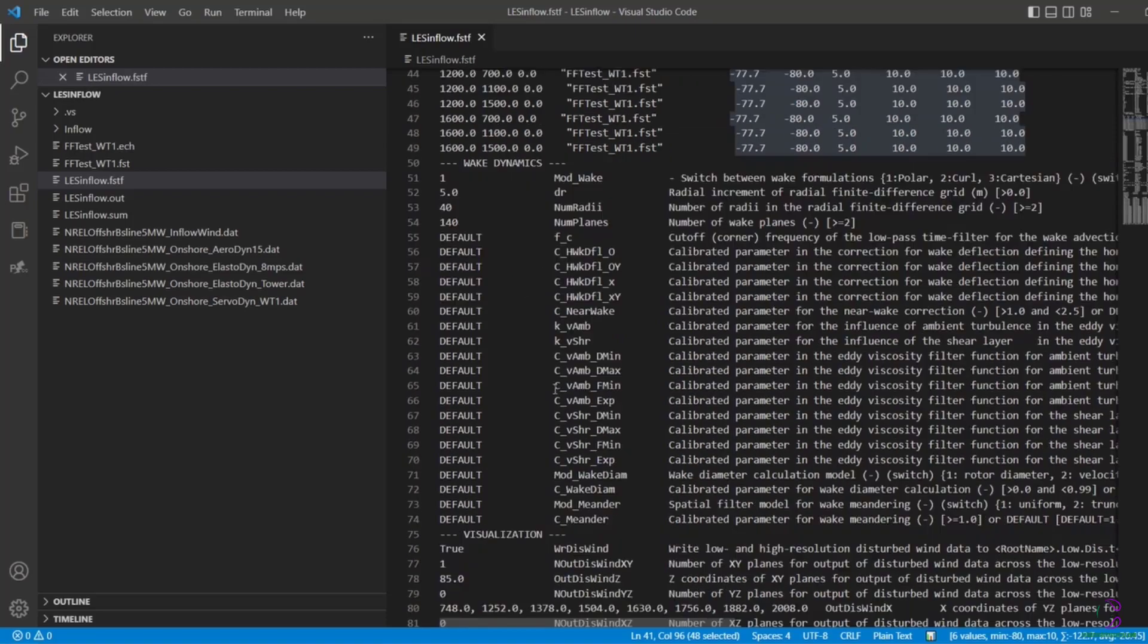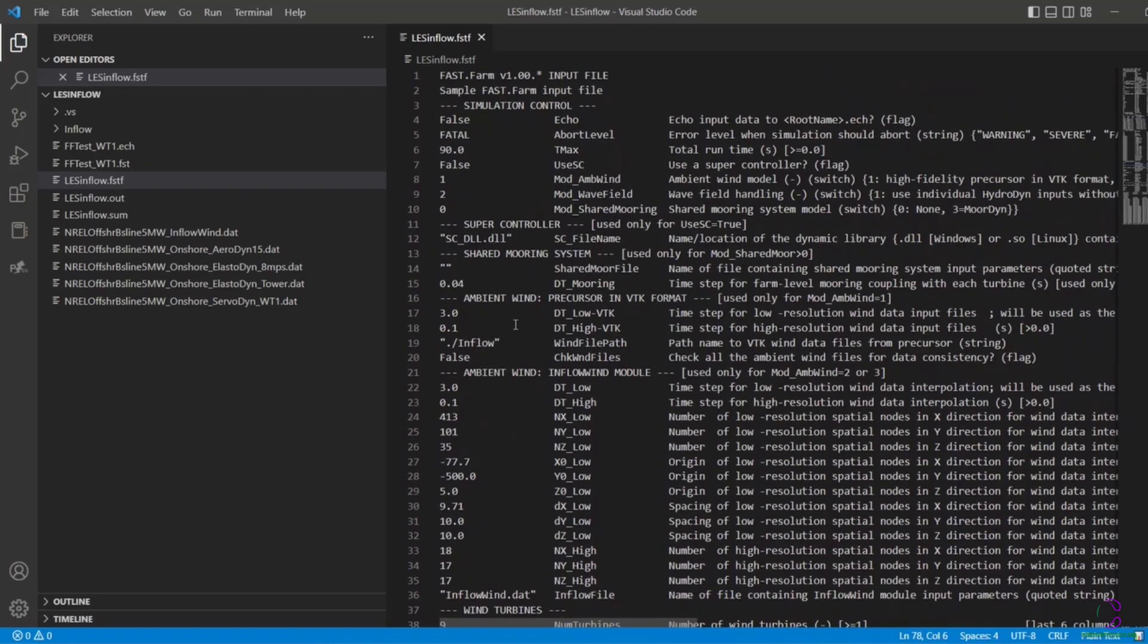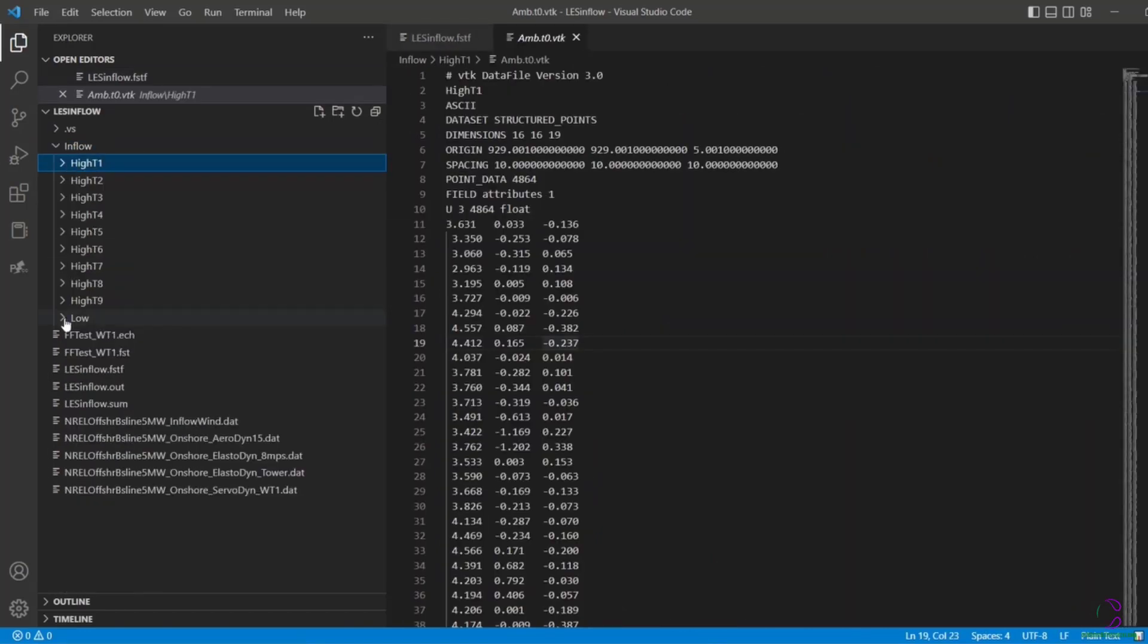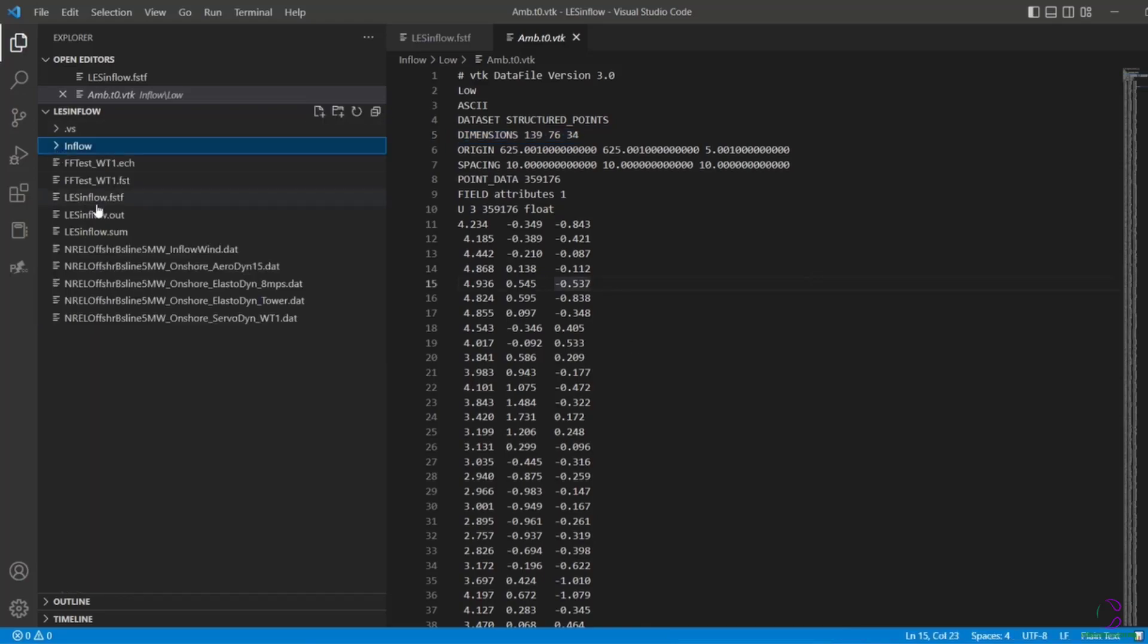So you can see here the VTK files and the data in it. They have three dimension wind speed as well as some other information which is what you generate from another application for the VTK wind data. So you see that the values are a lot. It is not something that you can just open and begin to change values manually. You need to use another software to generate it.